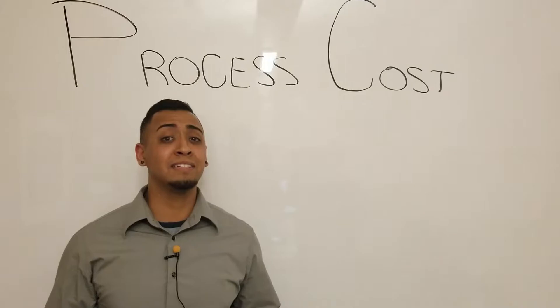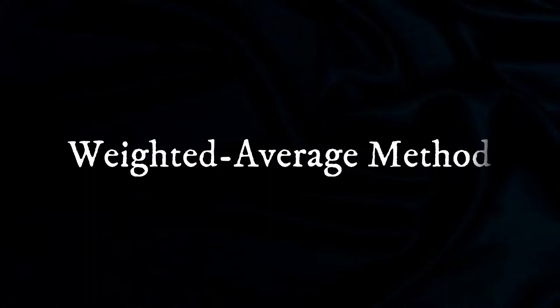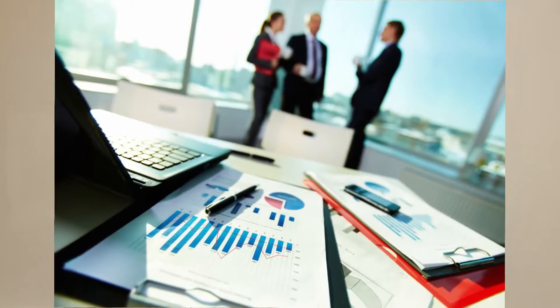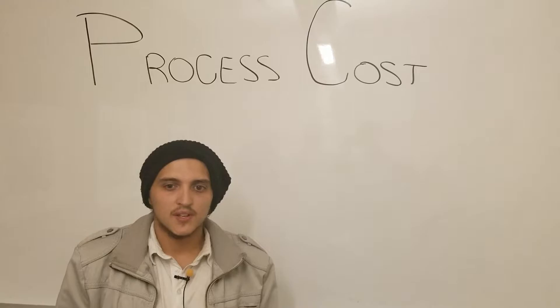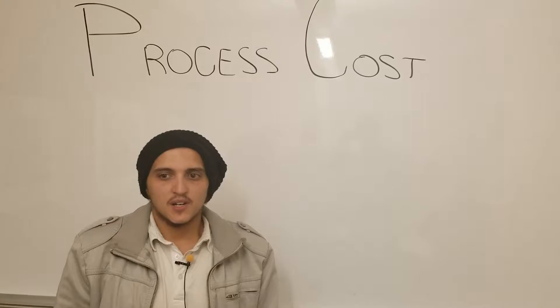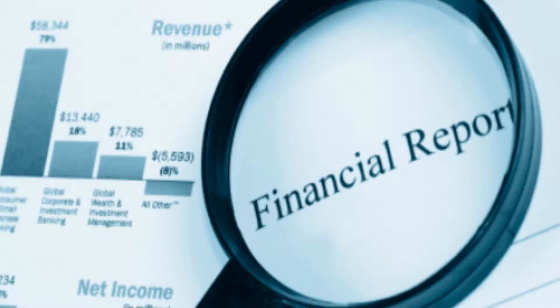This leads to the two types of processes that we use, which are weighted average and FIFO. The first method is the weighted average method. It is simple and the most commonly used in business because it combines all costs together and distributes the amount. The second method is first in, first out. Both methods are GAAP-approved, meaning Coca-Cola can use these methods for financial reporting purposes.